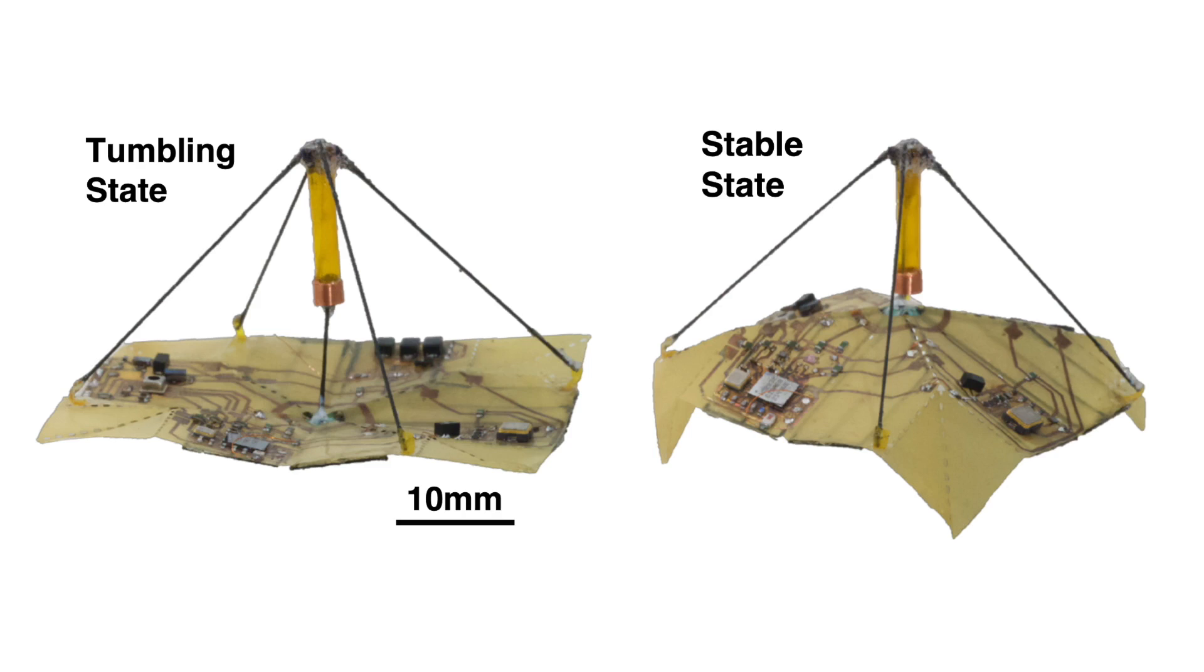We discovered that these two states have dramatically different falling behaviors. In one shape, they tumble chaotically in the wind like elm leaves, whereas in the other state, they have a stable and graceful descent like a maple leaf.